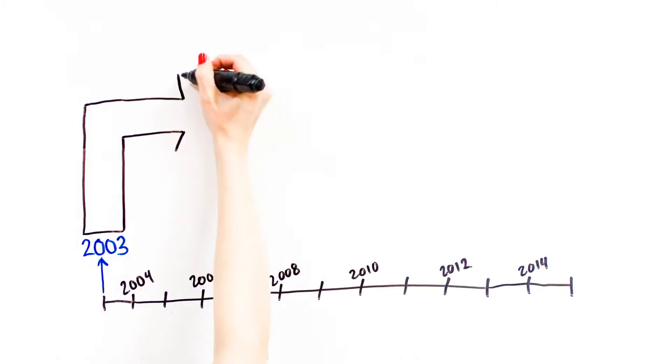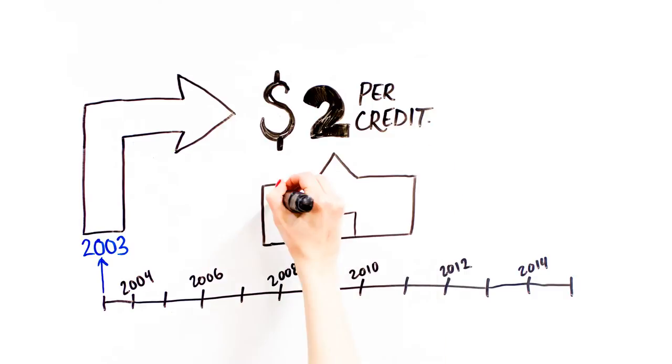This fund was originally created in 2003 with the purpose of collecting $2 per credit in order to purchase a student building.